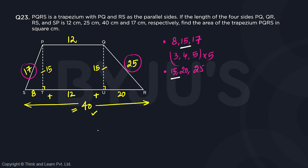So the very basic Pythagorean triplets will help us solve this very quickly. So the area of the trapezium is given as half into sum of parallel sides into perpendicular distance between them.